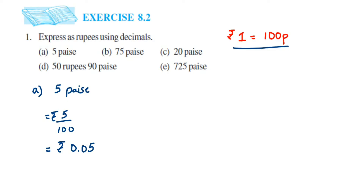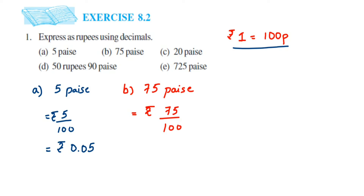The second question is 75 paise. Same process: divide by 100, giving 75/100 rupees. There are two zeros in the denominator, so from the right side we count two places — five, then seven — put the decimal point, then zero: 0.75 rupees.